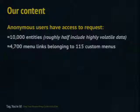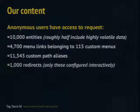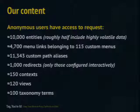About 4,700 menu links belong to about 115 custom menus. We use custom menus to permission out those menu authorizations to different editors. A little more than 11,000 custom path aliases. A thousand redirects using the redirect module — these are interactively configured, not in .htaccess or in code. About 150 contexts using the context module. 120 views — not that many now, but we're working up. We haven't really converted most of our big article libraries yet, so our vocabularies, terms, and taxonomy are pretty low at this point.